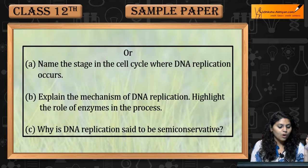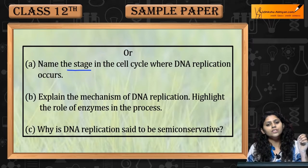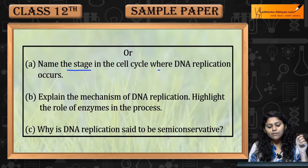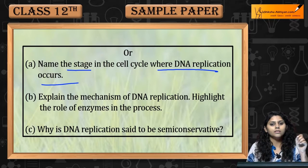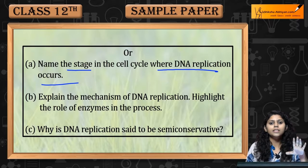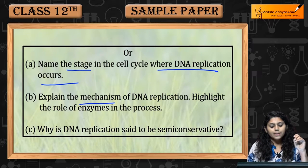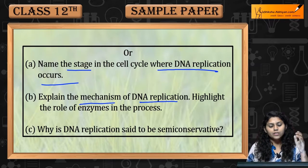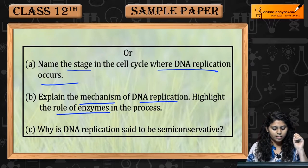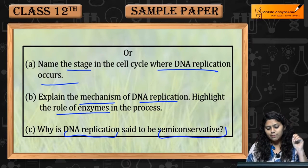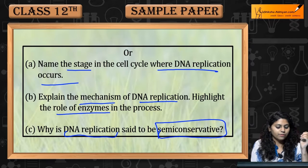Next question: Name the stage in the cell cycle where DNA replication occurs. Where does DNA replication happen in the cell cycle? Explain the mechanism of DNA replication, highlight the role of enzymes in this process, and explain why DNA replication is said to be semi-conservative.